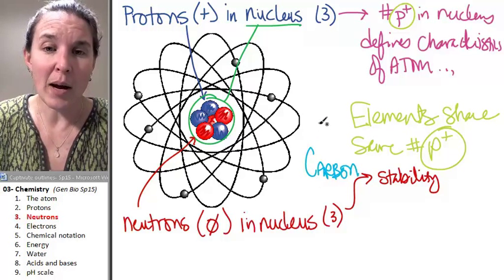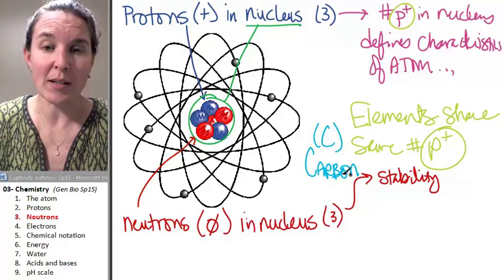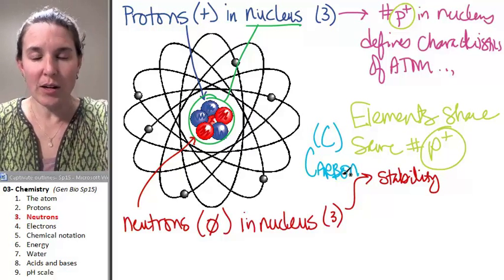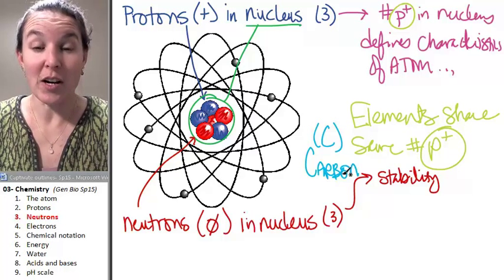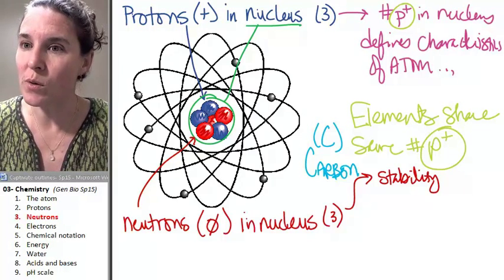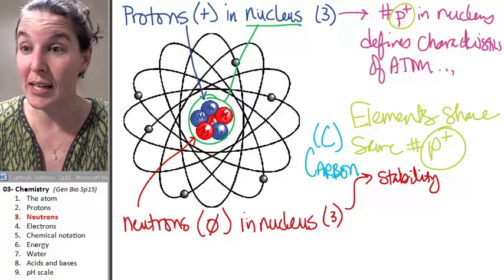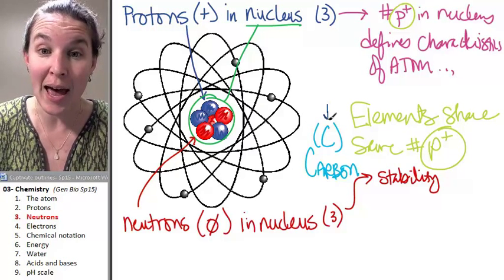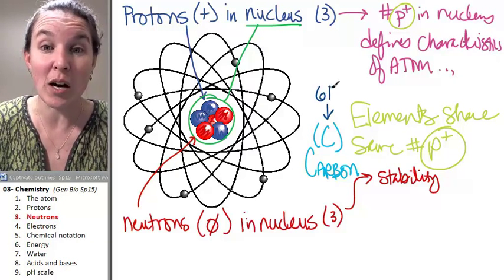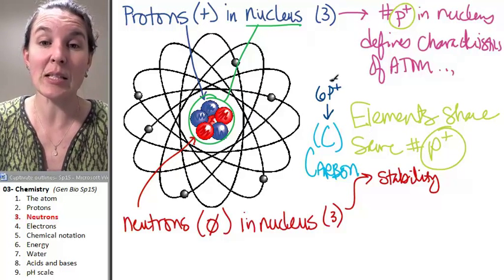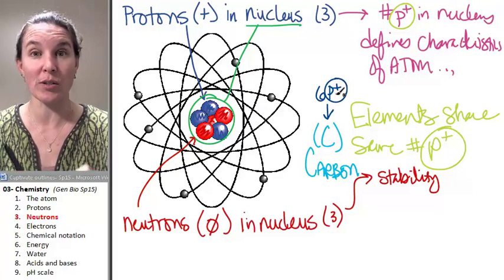So let's just consider a carbon atom. My symbol for carbon is, of course, C. If you consult your periodic chart, you will see that a carbon atom has six protons, six positively charged particles in the nucleus.